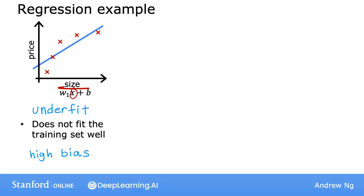If the algorithm has underfit the data, meaning that it's just not even able to fit the training set that well. That there's a clear pattern in the training data that the algorithm is just unable to capture. Another way to think of this form of bias is as if the learning algorithm has a very strong preconception, or we say a very strong bias, that the housing prices are going to be a completely linear function of the size, despite data to the contrary. So this preconception that the data is linear causes it to fit a straight line that fits the data poorly, leading it to underfit the data.